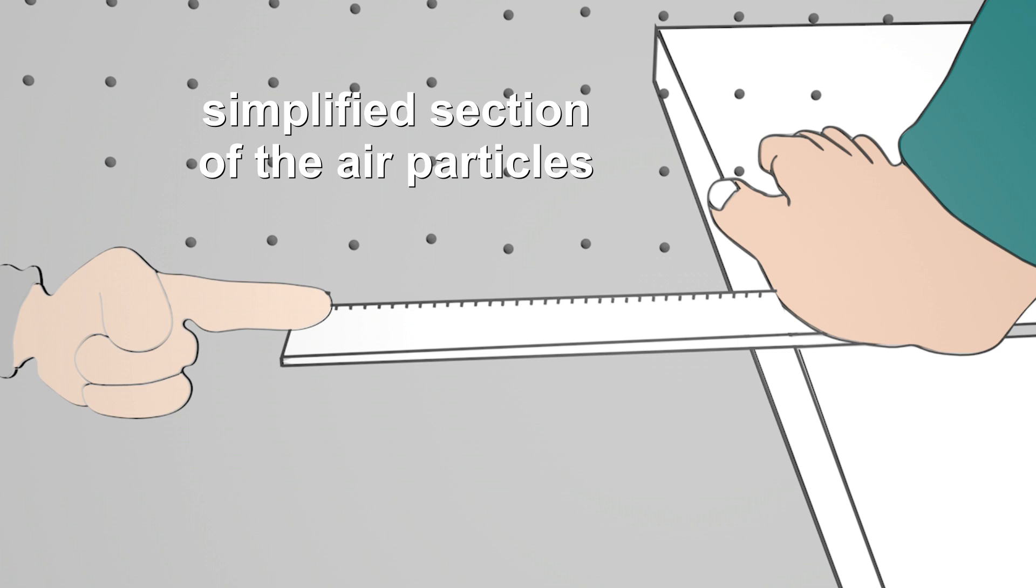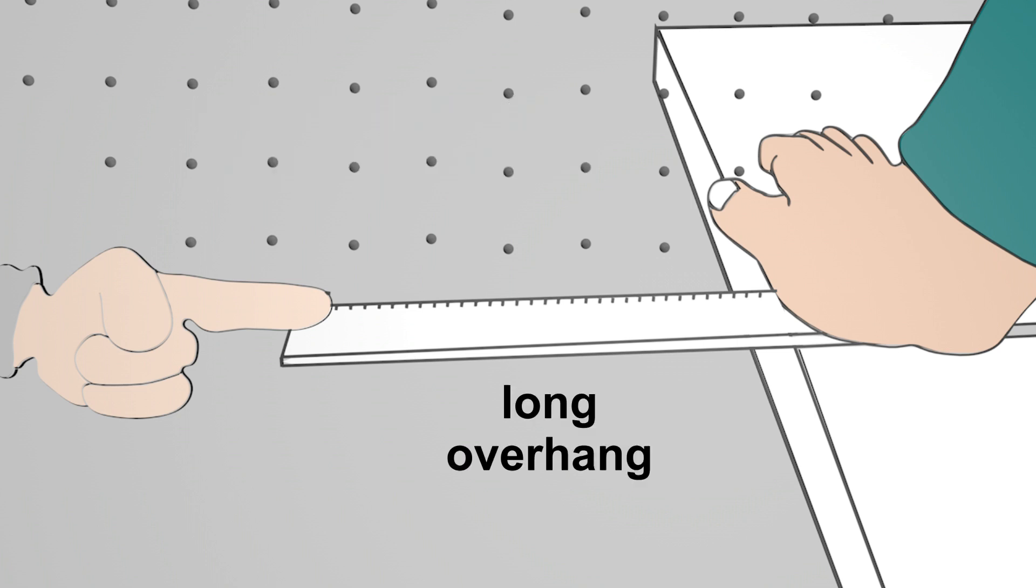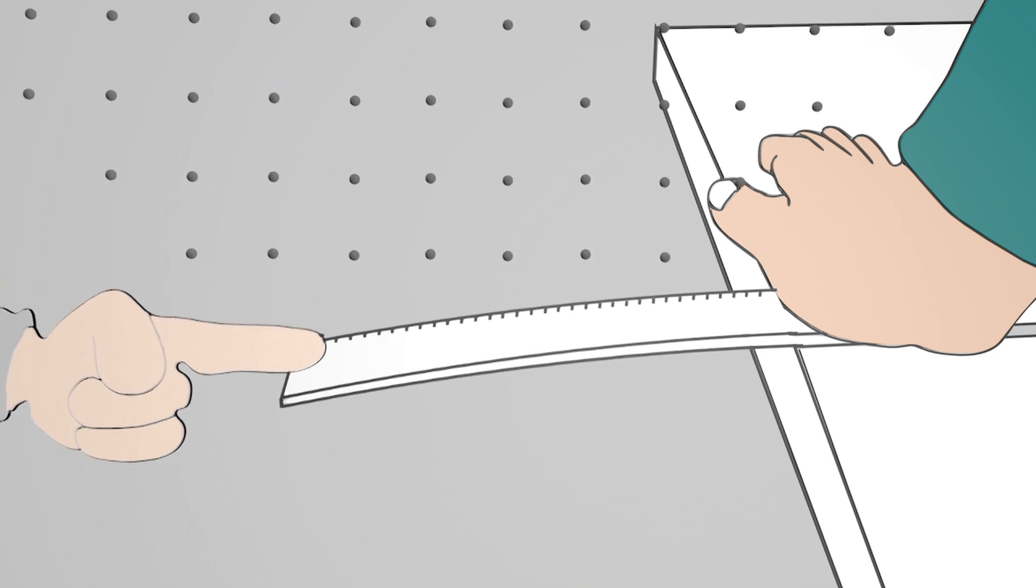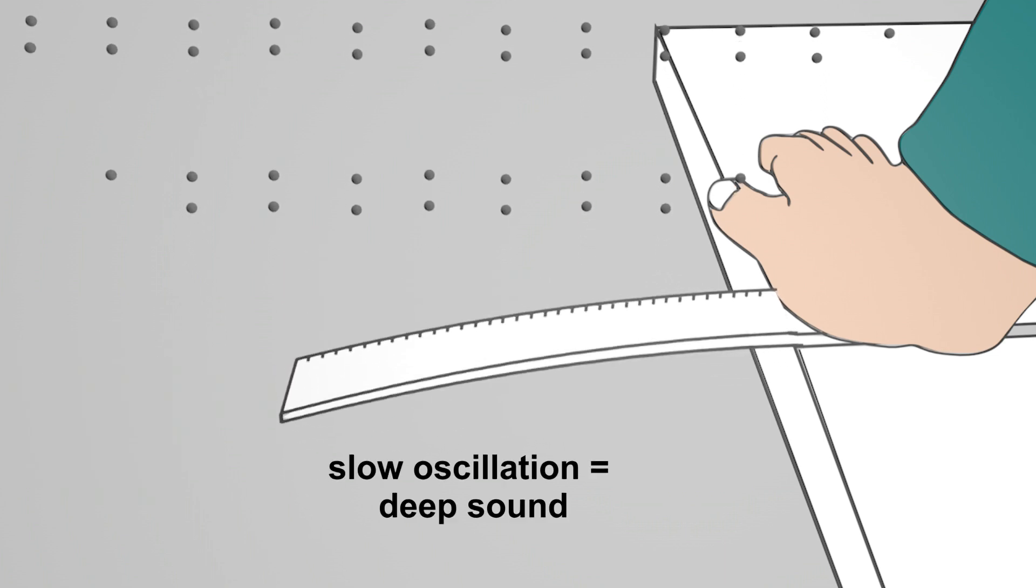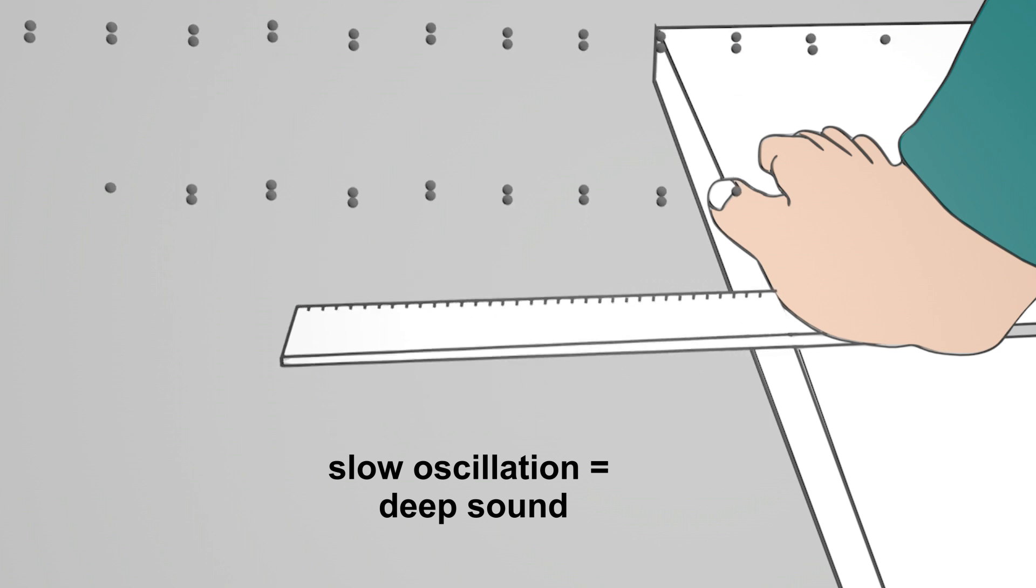First the ruler lies on the table so that a long piece protrudes. If you deflect the ruler, the ruler swings back and forth relatively slowly and slowly hits the surrounding air particles. These relatively slow oscillations are then transmitted to our eardrum in the ear and we hear a deep sound.